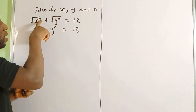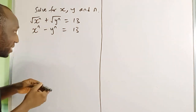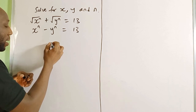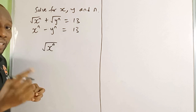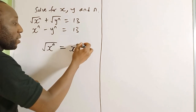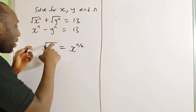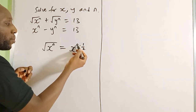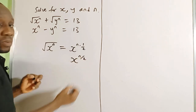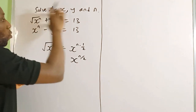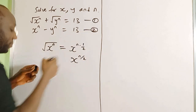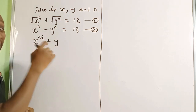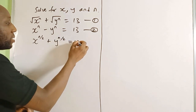Let x raised by n square root be equal to p. Now, do you know that the square root of x raised by n can also be written as x raised to power n over 2? This is one of the laws of indices — the square root becomes raised to the power of a half, and n times a half gives n over 2. So equation 1 becomes: x raised to n over 2 plus y raised to n over 2 equals 13.